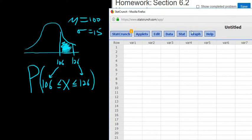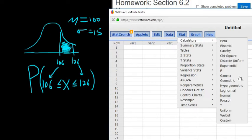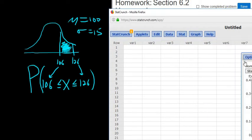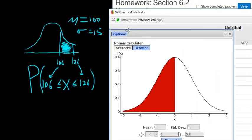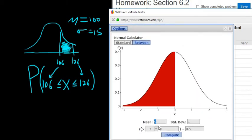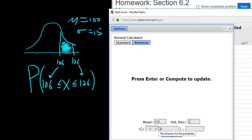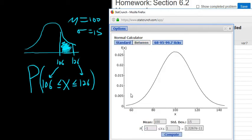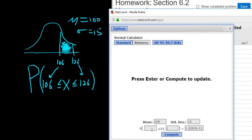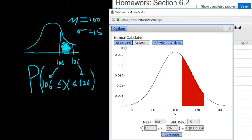Let me do it again. It's Stat, Calculators, Normal. We drag it over here so we can see it. The mean in this problem was 100, standard deviation was 15. We click the between probability because it's between. The number on the left is 106, the number on the right is 126. It matches what we have written down. Click Compute. There it is, 0.3031, because the 6 rounds the 0 up to a 1.